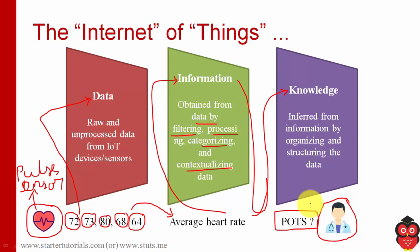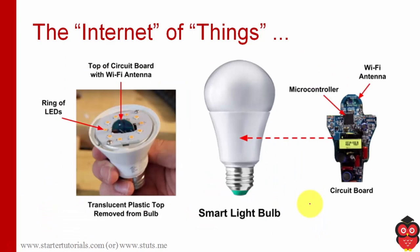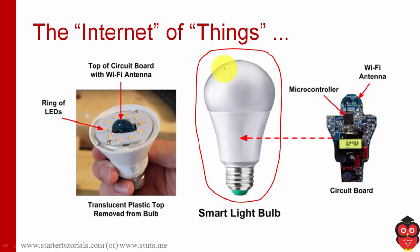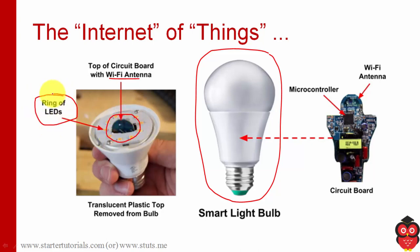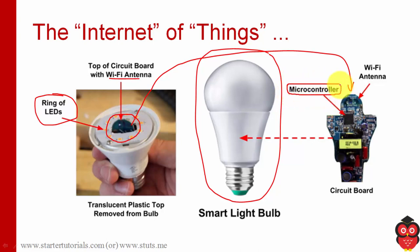Now let's see how a smart bulb looks. This is the smart bulb's outer appearance. If you remove the outer dome, inside you can see a circuit board with a Wi-Fi antenna, which sends and receives data through Wi-Fi, and LEDs for display. Taking a closer look at the circuit board, there is a microcontroller — the computing element — which processes the data, and a Wi-Fi antenna to send and receive signals. That is how a smart bulb looks.